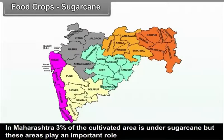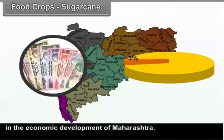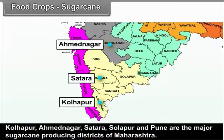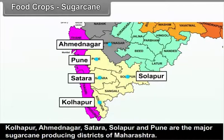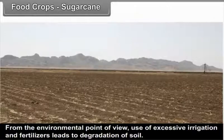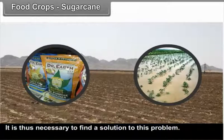In Maharashtra, 3% of the cultivated area is under sugarcane, but these areas play an important role in economic development. Kolhapur, Ahmadnagar, Satara, Solapur, and Pune are the major sugarcane-producing districts. From an environmental point of view, excessive use of irrigation and fertilizers leads to soil degradation, and it is necessary to find a solution to this problem.